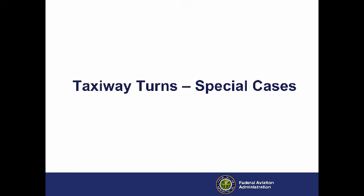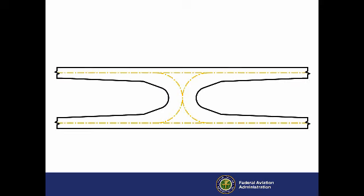Taxiway turns, special cases. One special case is an intersection allowing an airplane to reverse direction from one taxiway to a parallel taxiway. When designing parallel taxiways with crossover taxiways, engineers and planners must consider both the TDG and ADG. The necessary separation between parallel taxiways is the greater of that determined by the ADG wingtip clearance and that determined by the TDG minimum turn radius.